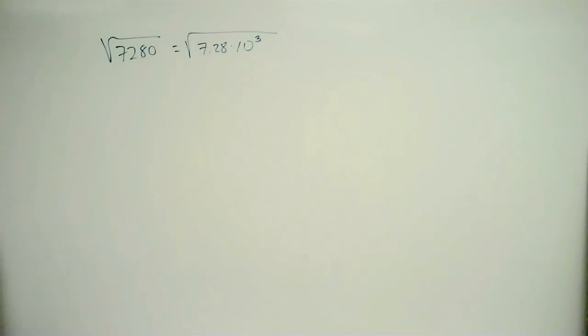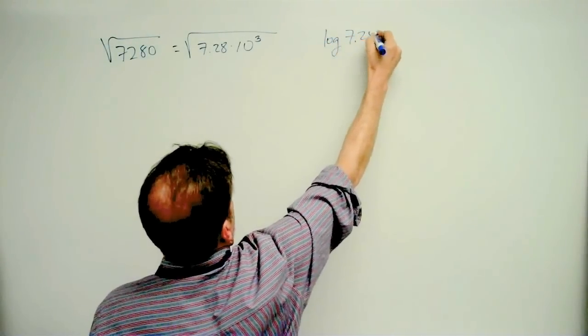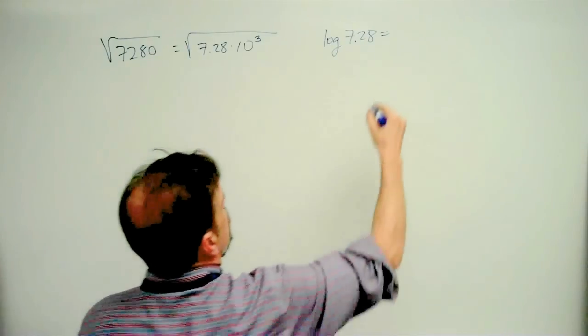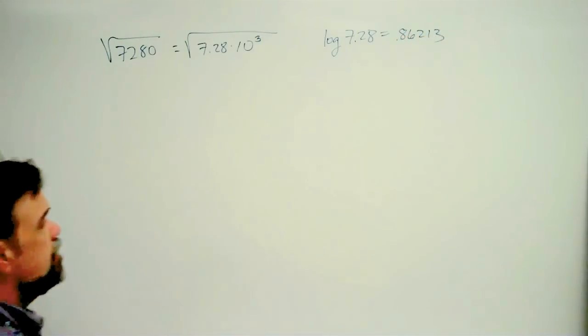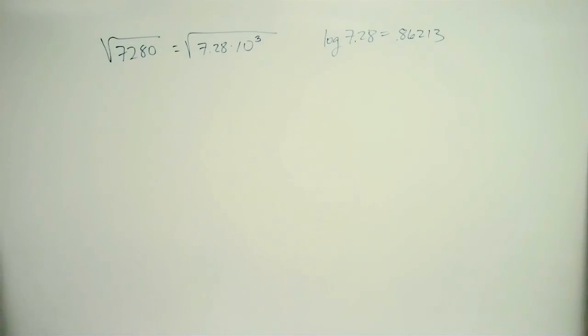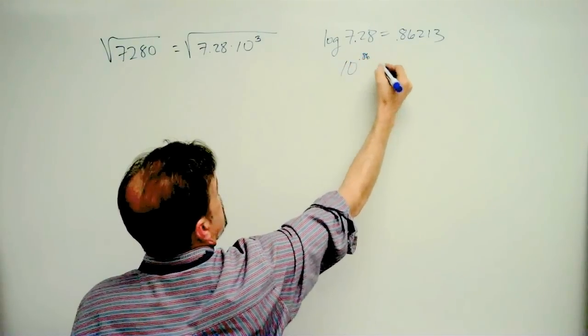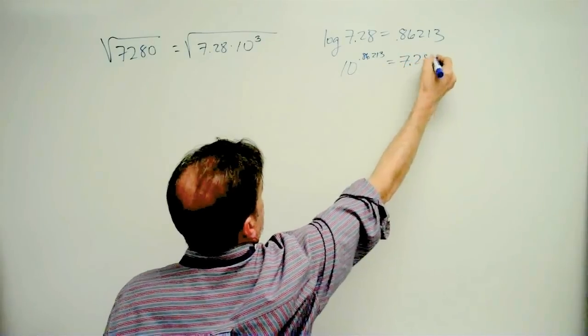Okay, now at this point I use my table of logarithms. And so I say, okay, what's the log of 7.28? And as it turns out, it is 0.86213. Just look up on your table of logs and you will find that that's the answer. Now, what does that mean? That means that 10 to the 0.86213 equals 7.28.